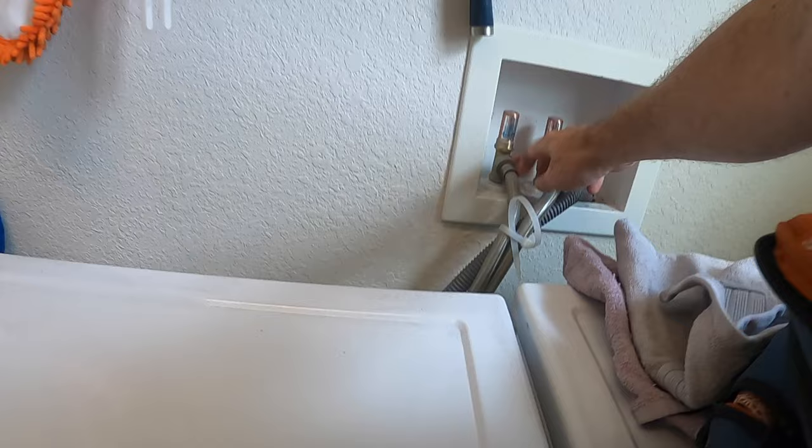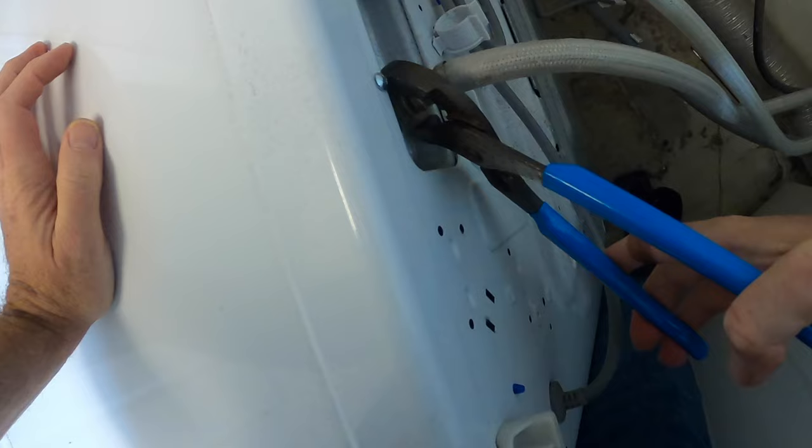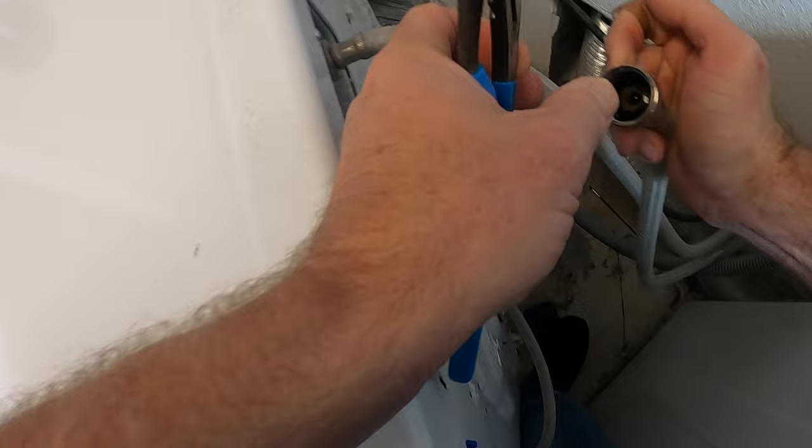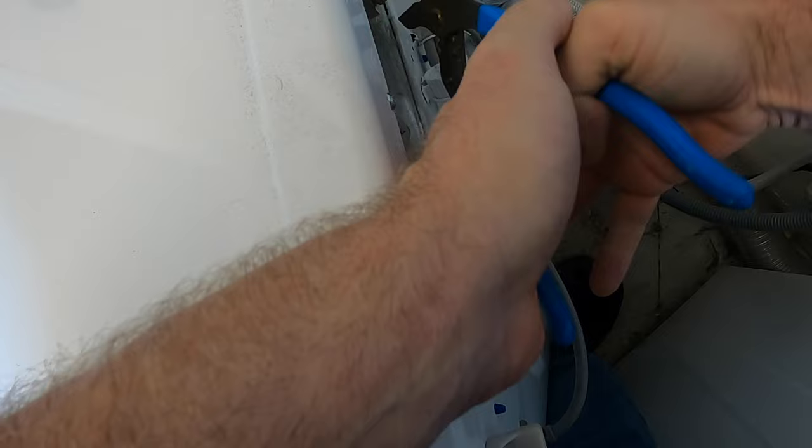To prevent leaks, turn off the water supply and come around back and unplug the machine to prevent electrocution. Next, with some channel locks, loosen the cold water hose, finish unscrewing by hand, and be careful not to spill water.